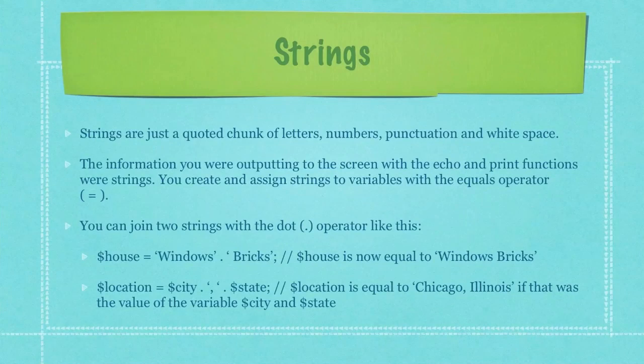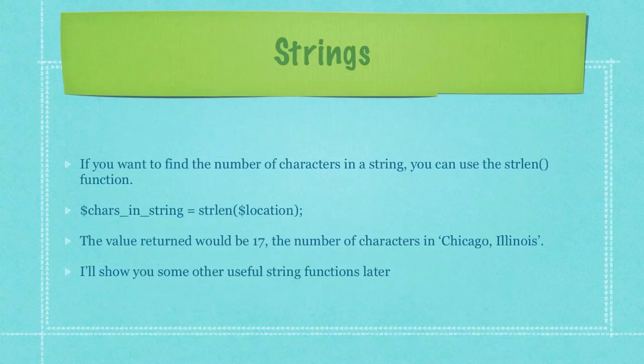Strings are just a quoted chunk of letters, numbers, punctuation, and white space. The information you were outputting to the screen with the echo and print functions were strings. You create and assign strings to variables with the equals operator. You can join two strings with the dot operator — as you can see here, I am combining the string 'windows' followed by 'bricks' and assigning it to the string variable 'house.' Here, location is equal to 'Chicago, Illinois' if that was the value of the variable city and state. If you want to find the number of characters in a string you can use the string length function, which in this example would return 17, the number of characters in 'Chicago, Illinois' including white space and punctuation. I'll show you some other useful string functions later.